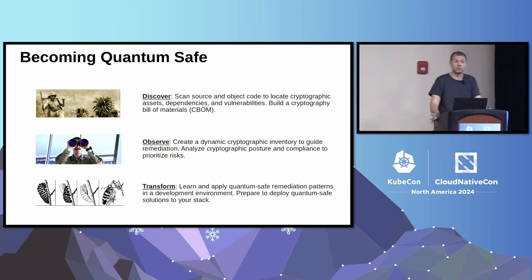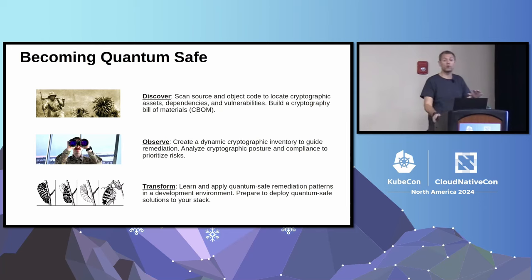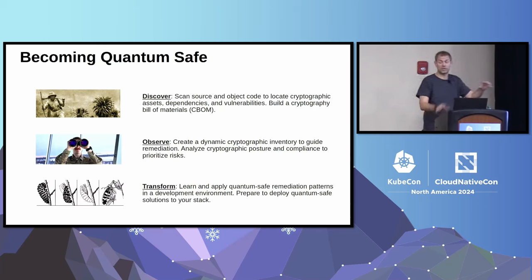The second step is Observe. Once you know where you're using cryptography, you want to understand where it's most frequently used in your applications — model the network, see where it's being used, where you're most at risk. Identify not just where you're using cryptography, but how it actually works in your applications, so you can figure out where to mitigate.